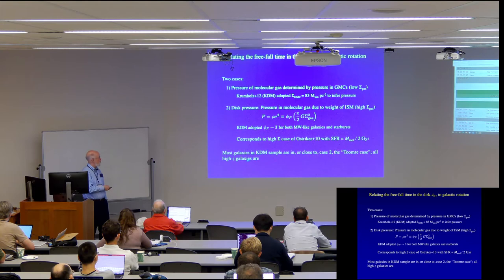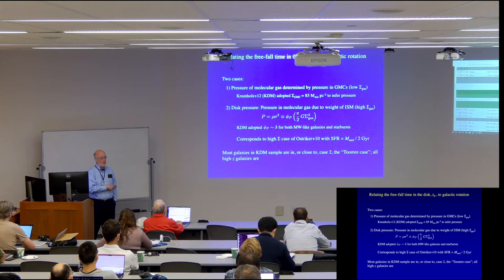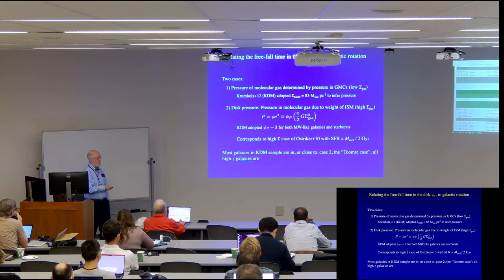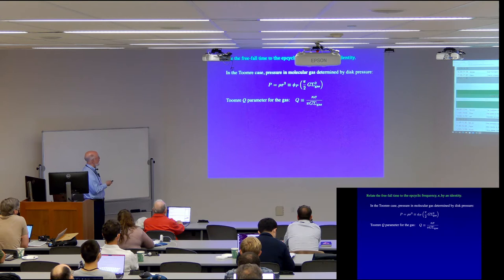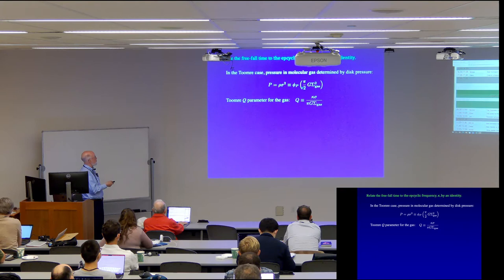And this case here corresponds to the high surface density case that I and Adam worked out. So most galaxies in the sample of galaxies that Mark and Avishai and I worked on are in this second case, which we call the Toomre case. And all the high redshift galaxies are, so that's the case I'll focus on now. So what we're going to relate is the freefall time to the epicyclic frequency. So as I just mentioned, in the Toomre case, the pressure is determined by the disc pressure. So we have that.